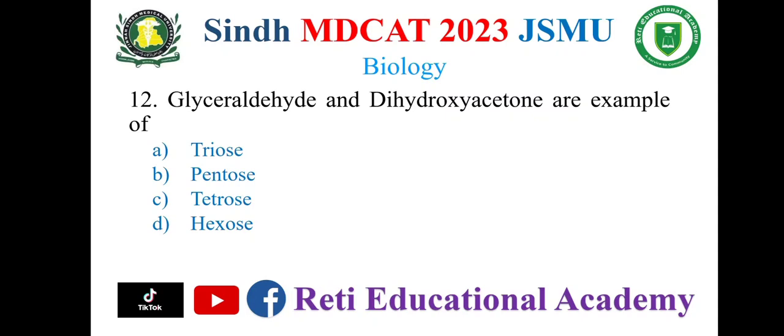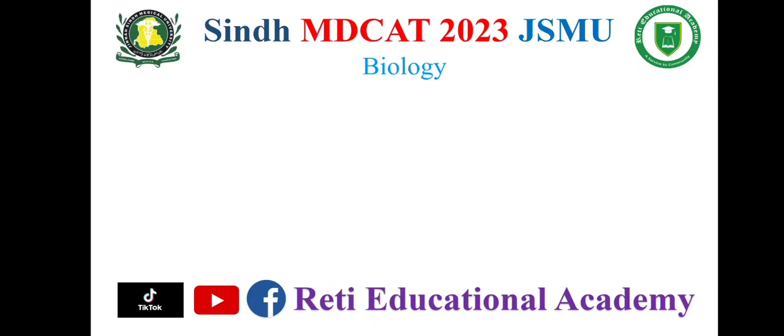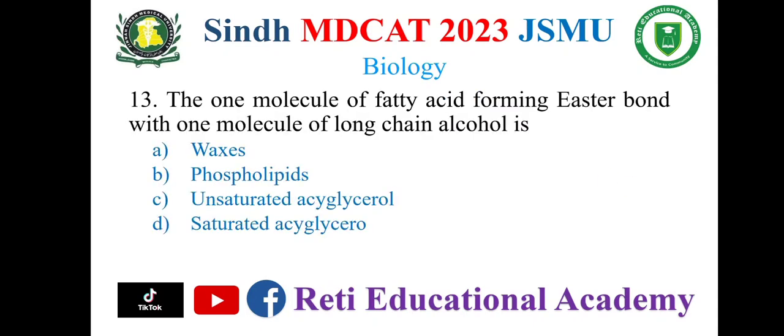Question number 12. Glyceraldehyde and Dihydroxyacetone are examples of: A. Triose, B. Pentose, C. Tetrose, D. Hexose. And the correct answer is A. Triose.